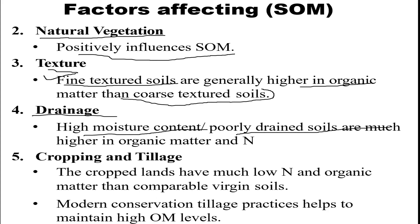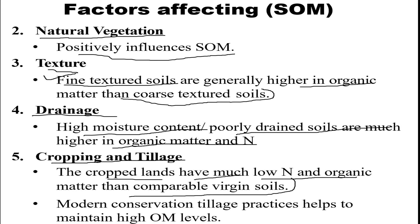Next is drainage — soils with high moisture content that are poorly drained are much higher in organic matter and nitrogen. Regarding cropping and tillage, cropped lands have much lower nitrogen and organic matter compared to virgin soils. Modern conservation tillage practices help maintain high organic matter levels.